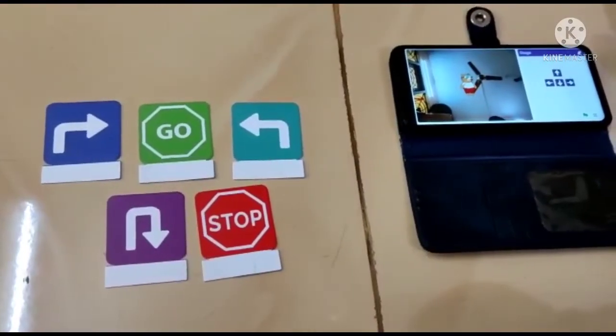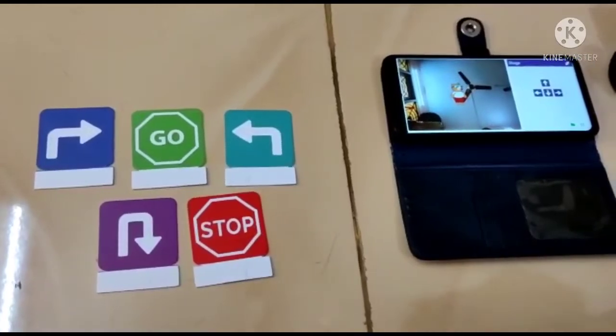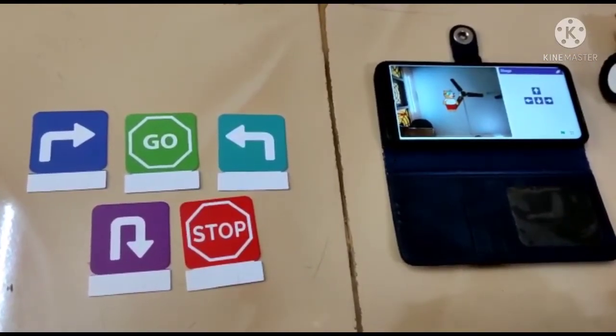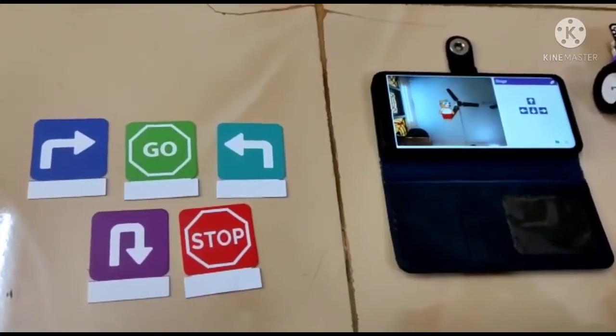Here I have the 5 different road signs which I will be using today. I shall be showing each of the road signs in front of my mobile camera. The Pictoblocks app will detect the road sign and make the Quacky move in the desired direction.